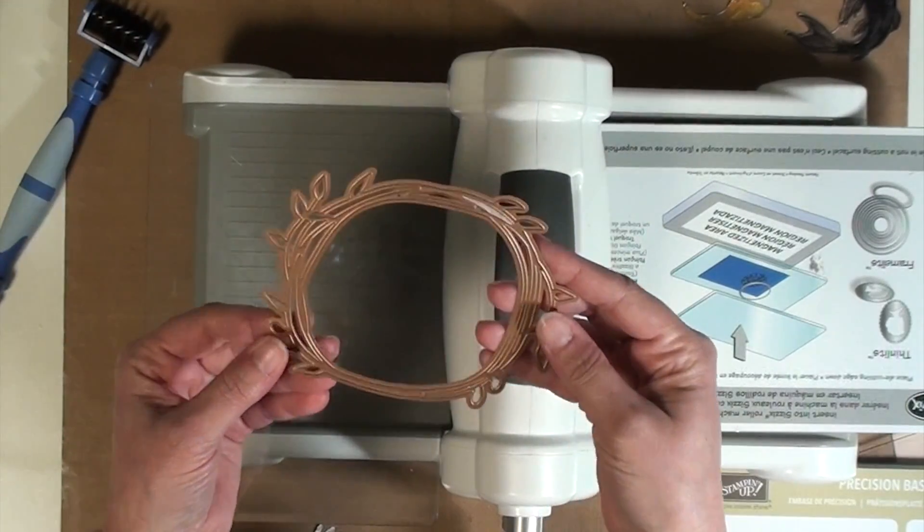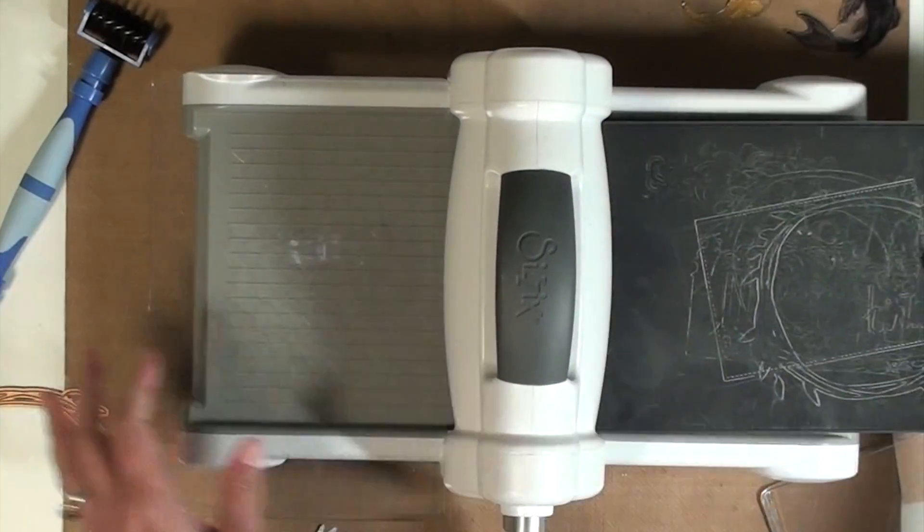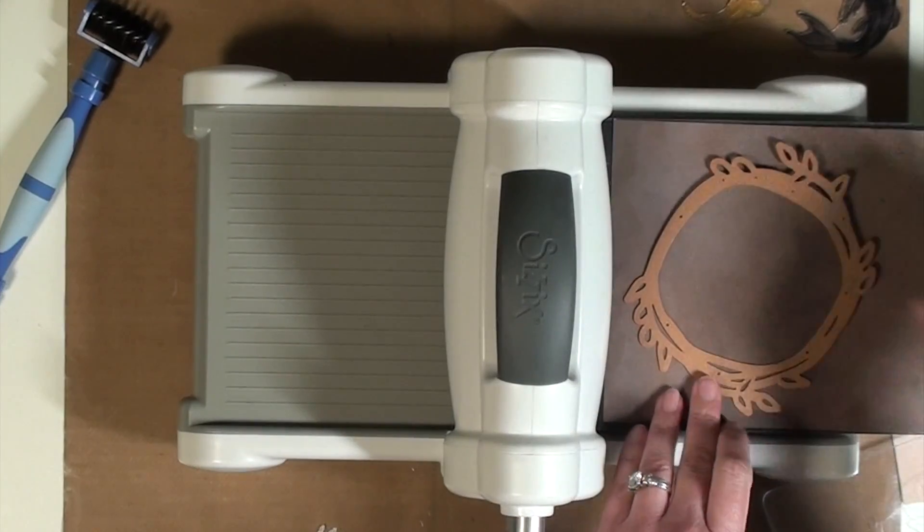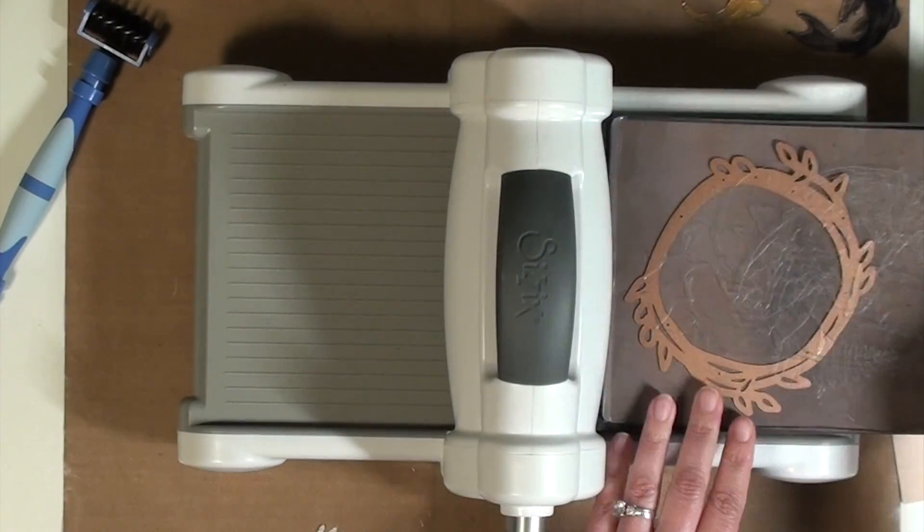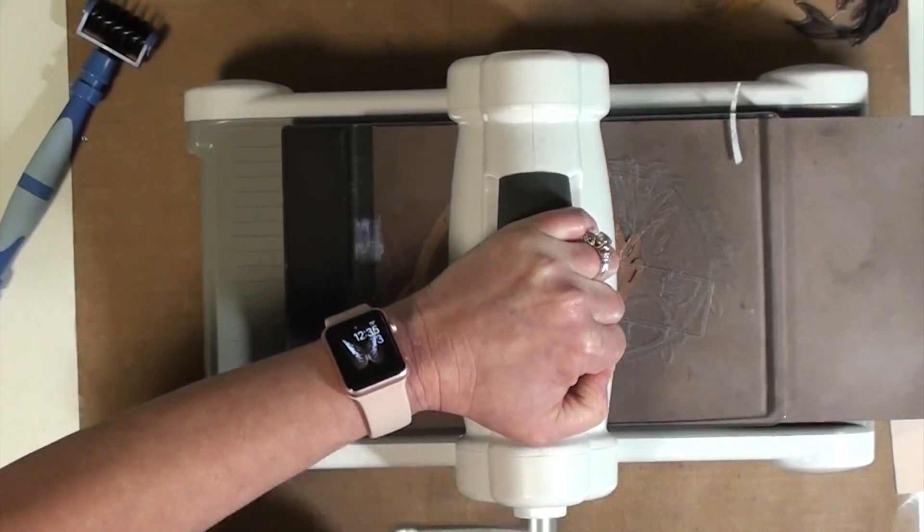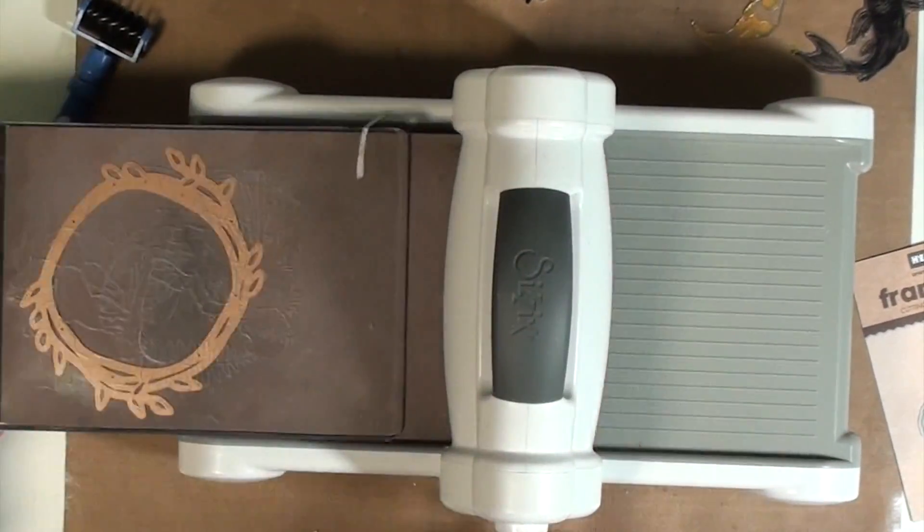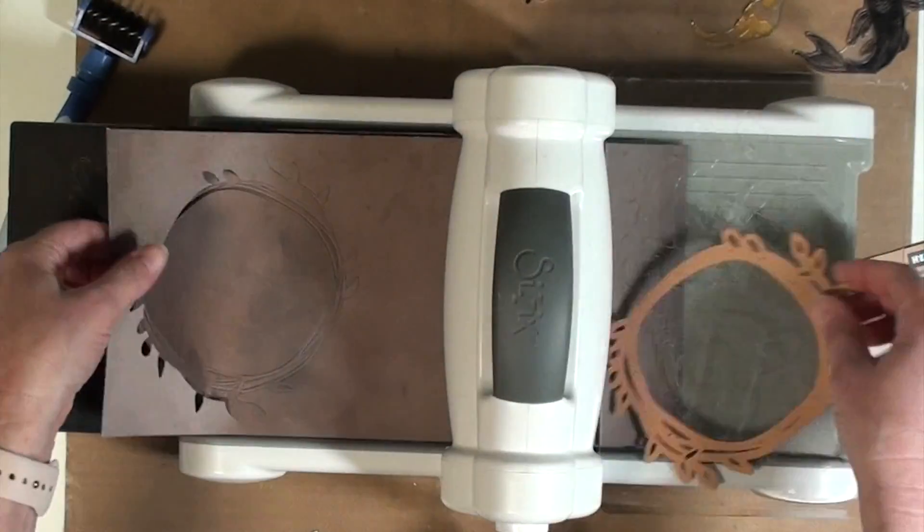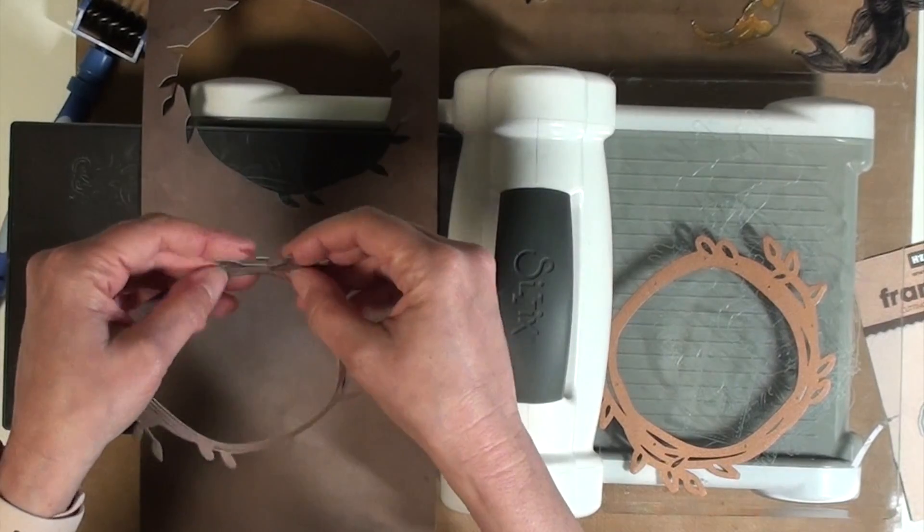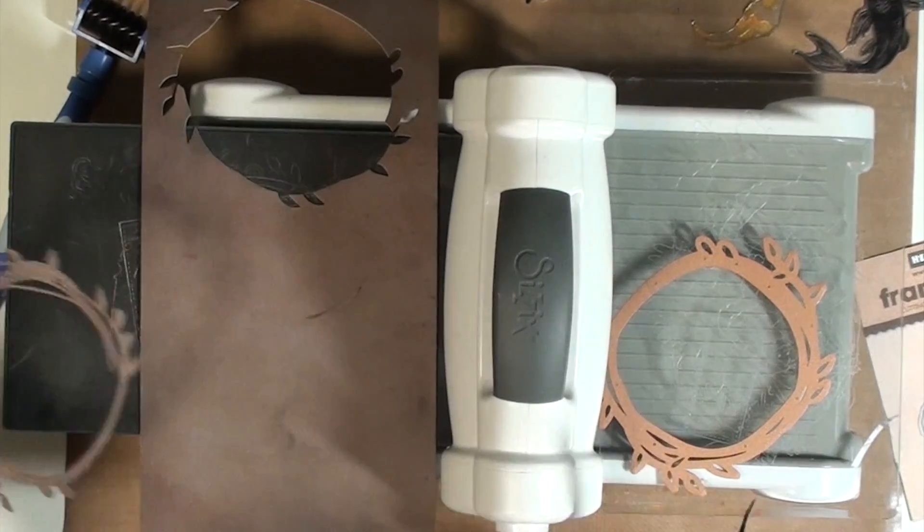Next I moved on to cutting this large Spellbinders die in the same green paper. I realized later that when I did this video I did not capture that part so I'm actually re-filming this section so you can see it. In this case I used a precision base plate because I found it made it much easier to get the paper removed from this die because it's so intricate. I am cutting this on brown paper but in real life when I did this I cut it on the green paper not the brown paper.